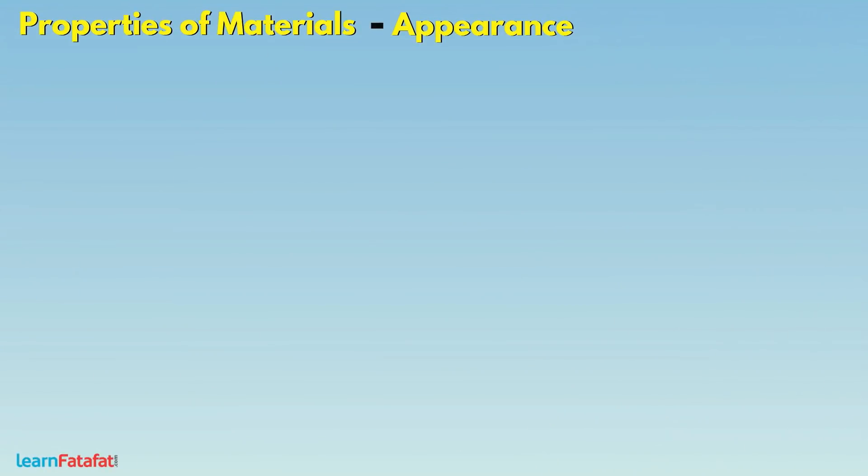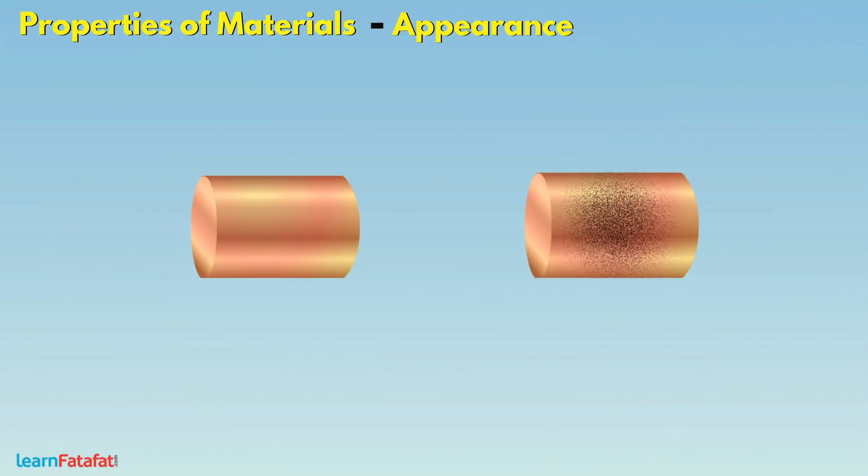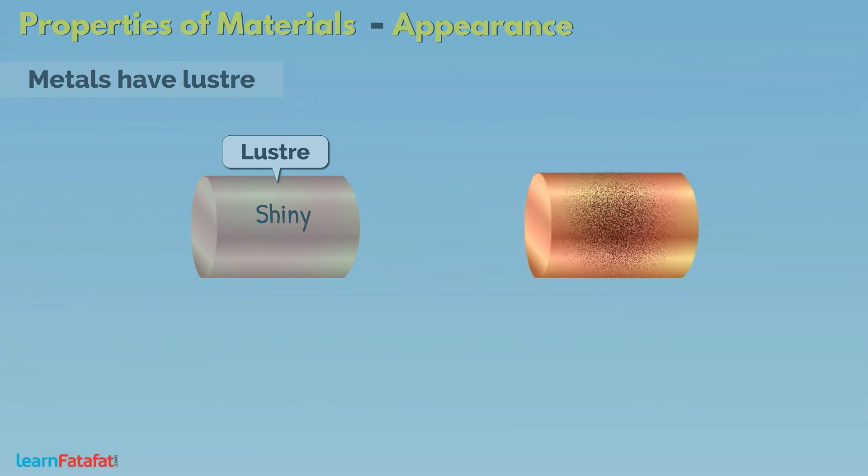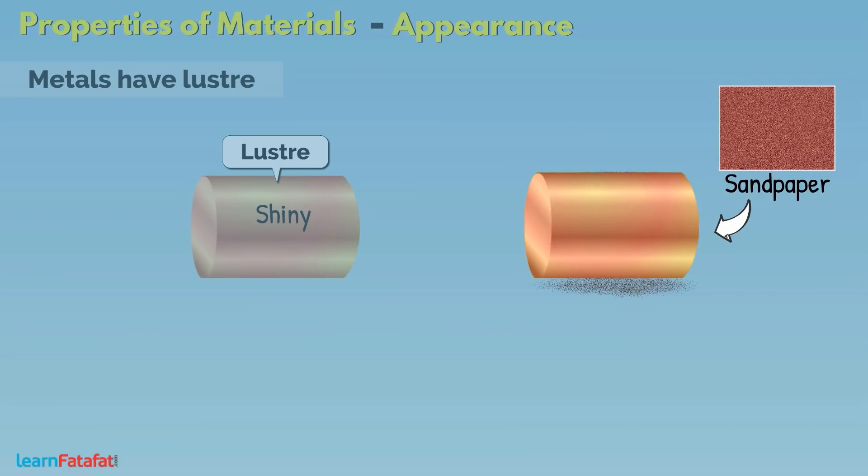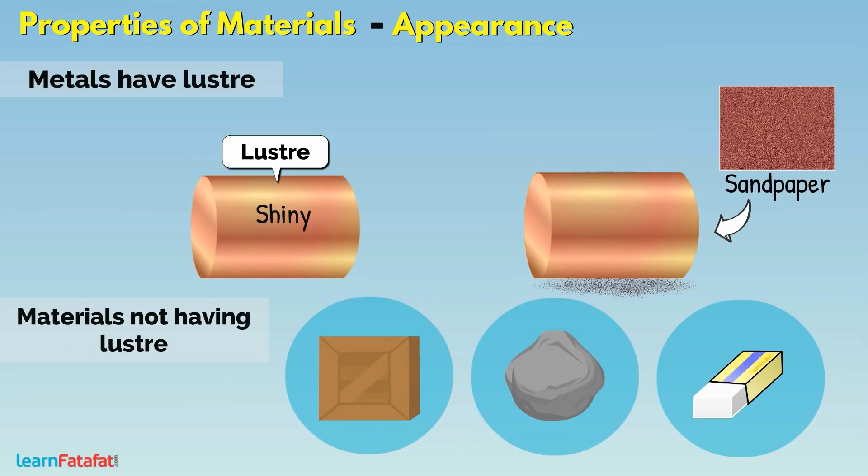Appearance. It gives idea about the visual look of the material. If a material appears shiny, then we say that it has a property called lustre. Usually, metals have lustre. If you don't see lustre on metal, try to rub the metal with sandpaper. You will see the metallic lustre. Other materials do not have lustre.